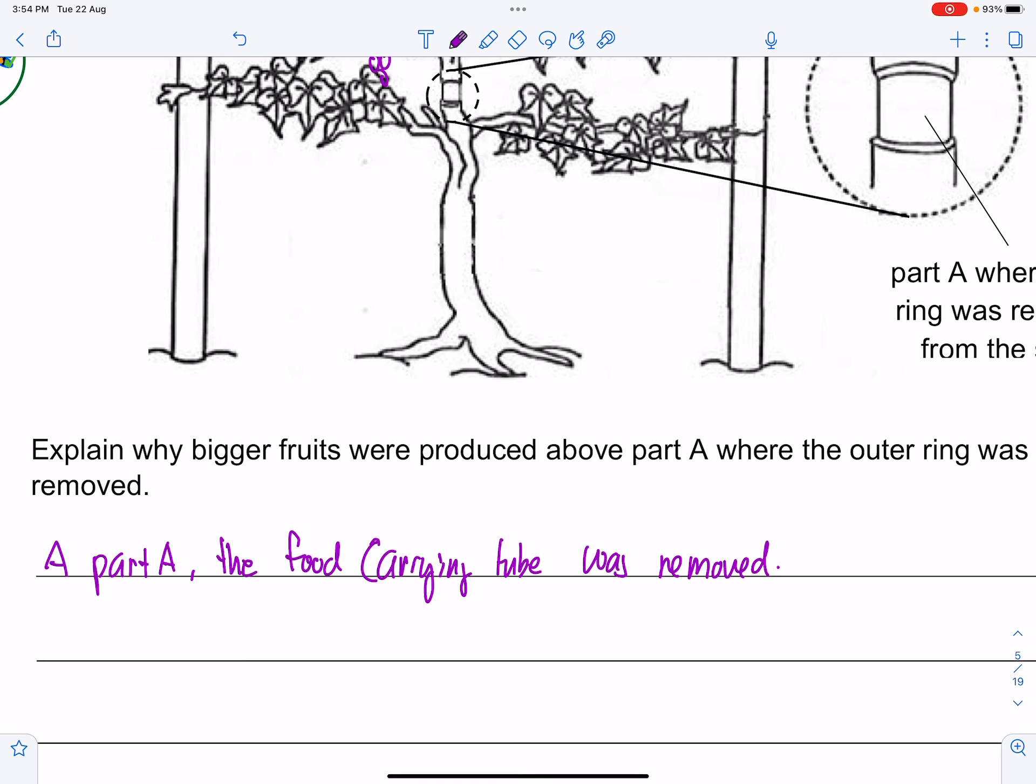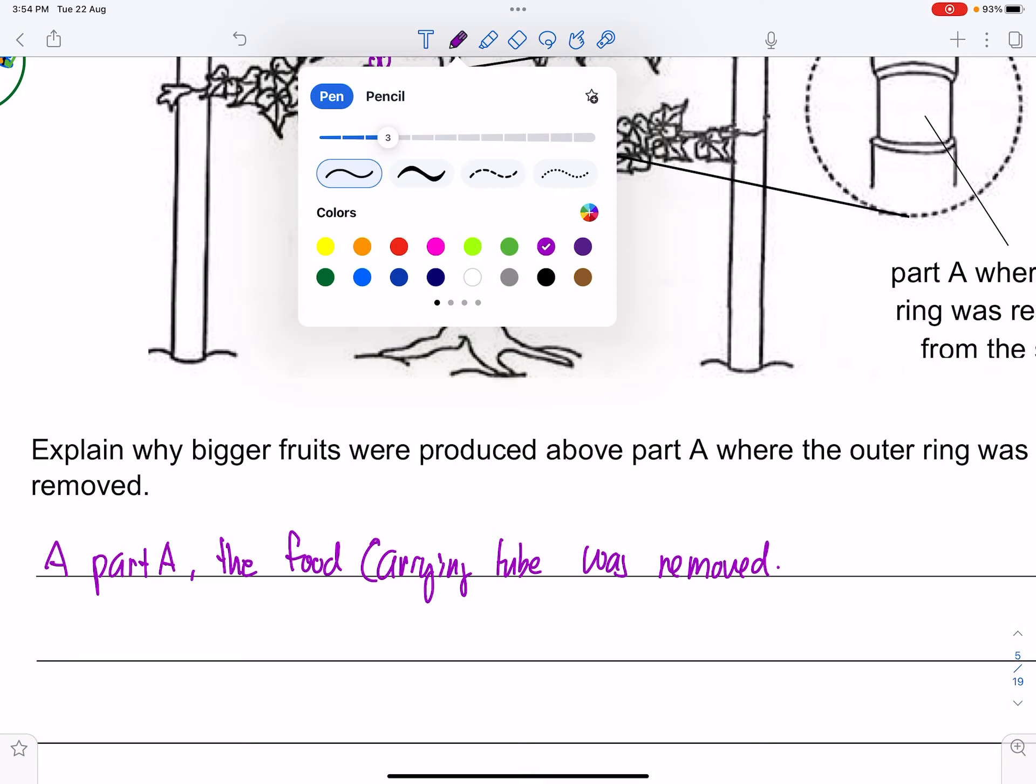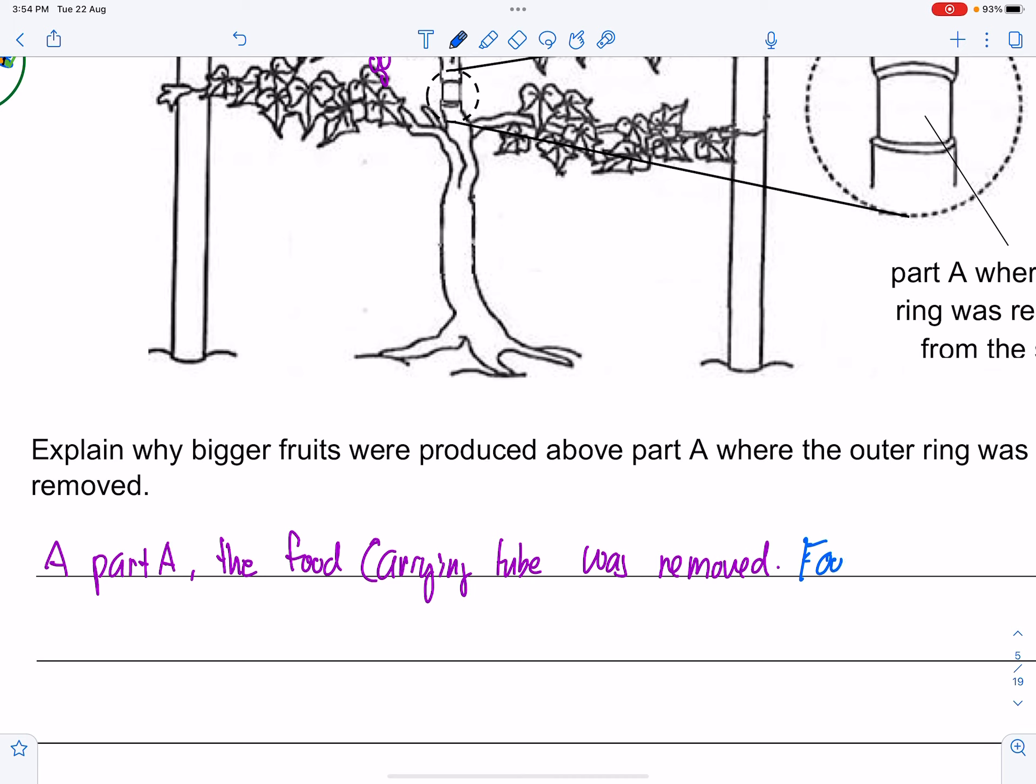So because it is removed, what happened next? Food made by leaves above point or part A can no longer, or cannot be transported below part A. So I am making reference here.